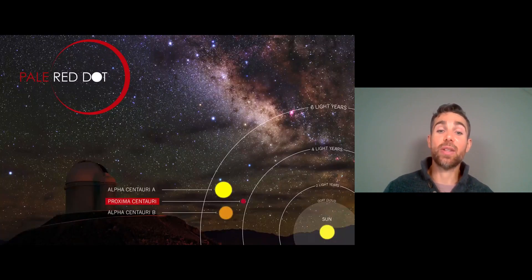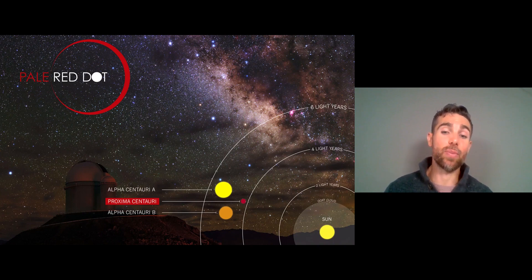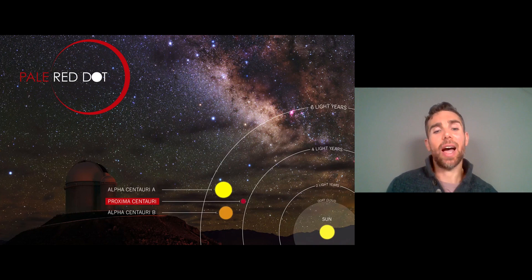Now the actual system that Proxima Centauri is in is the Alpha Centauri system. So you've got Alpha Centauri A and B which are a binary system of two larger stars, and then you have the third one, Proxima Centauri, which is part of that. Now that can also be called Alpha Centauri C because it is part of that triple system, but it's also known as Proxima Centauri.